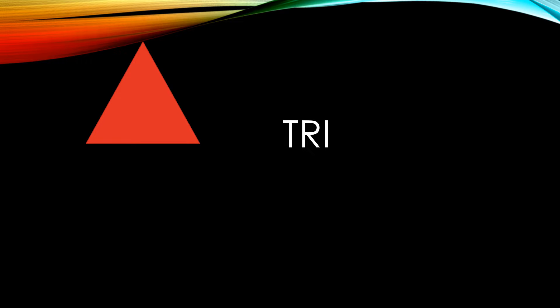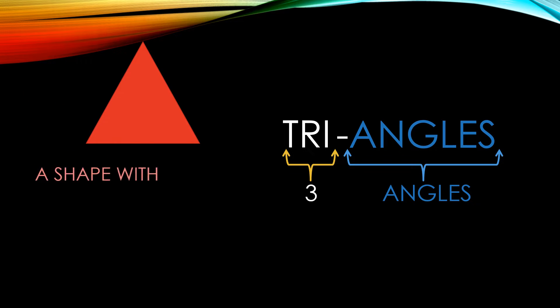Triangle is basically tri and angles. Tri means three, and angles. Tri-angles means a shape with three angles.